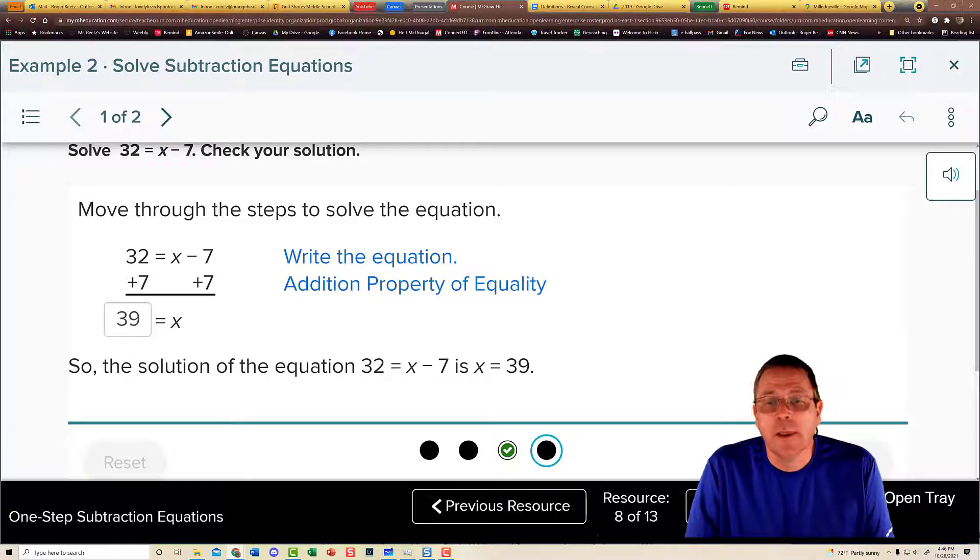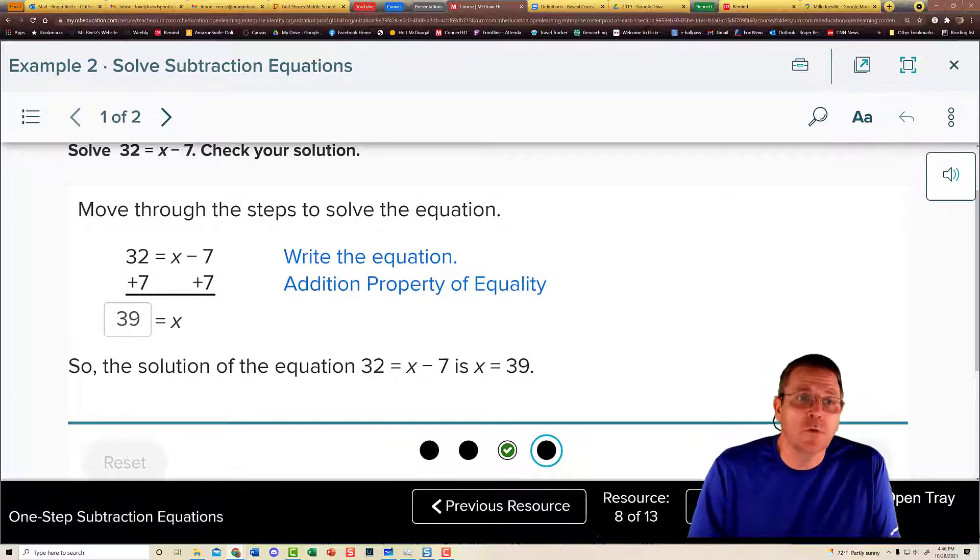And check your answer. And it checks. So from there, you could say that the solution to that equation is x is equal to 39. It really is that simple. That's all there is to show in your work. I will need to see some good supporting work like that on your homework tonight, though.